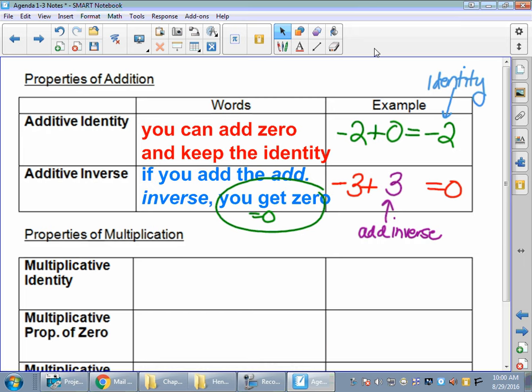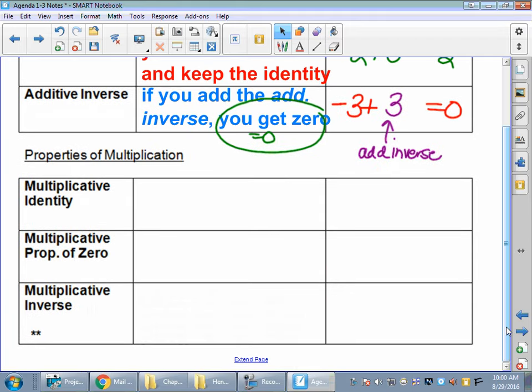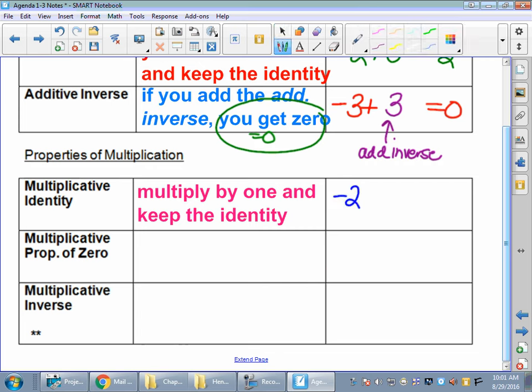Multiplicative identity. So if we're multiplying, how do we keep the same identity? We multiply by 1, right? So negative 2 times 1 is still negative 2. It keeps its identity. It doesn't change.